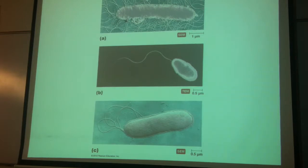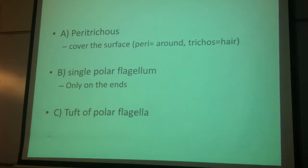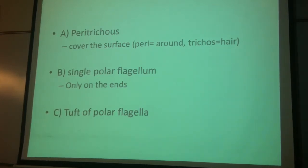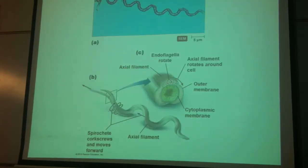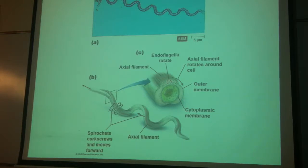Three basic types of flagella arrangement. You can have flagella all over, or a single polar, or a tuft of polar flagella. The other arrangement is endoflagella, which means it's inside — rotating makes the organism spiral through, so rather than having a whip-like projection on the outside, it actually turns the organism, like in spirochetes.